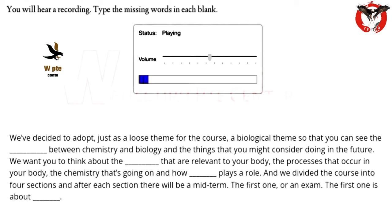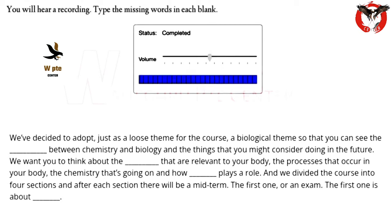We've decided to adopt, as a loose theme for the course, a biological theme, so that you can see the connections between chemistry and biology and the things that you might consider doing in the future. We want you to think about the molecules relevant to your body, the processes that occur in your body, the chemistry that's going on, and how energy plays a role. We divided the course into four sections, and after each section there will be an exam. The first one is about matter.